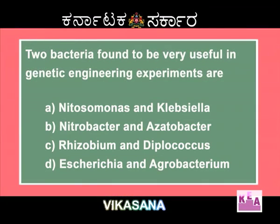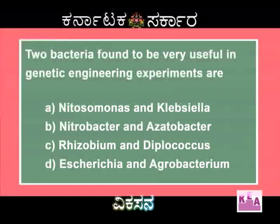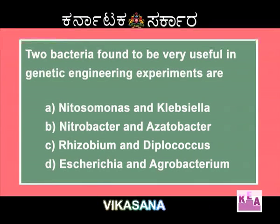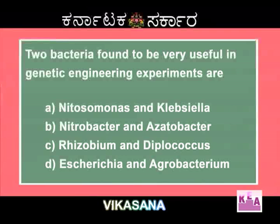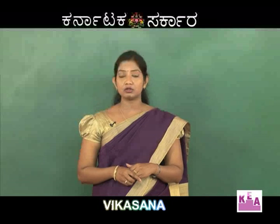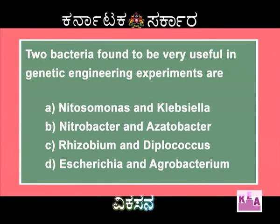Question: Two bacteria found to be very useful in genetic engineering experiments are — options: (a) Nitrosomonas and Klebsiella, (b) Nitrobacter and Acetobacter, (c) Rhizobium and Diplococcus. The bacteria in options a, b, and c are involved either in nitrogen fixation or are pathogenic, but the two bacteria in option (d) — Escherichia and Agrobacterium — are the ones extensively used in genetic engineering.